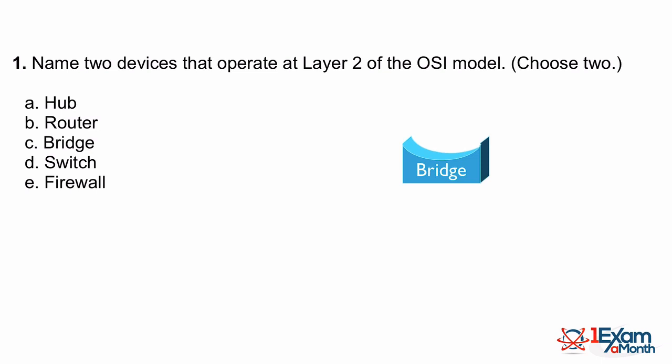An Ethernet bridge could break apart collision domains and learn the MAC addresses connected to each of its ports. If a frame came in with a destination MAC address residing off a different bridge port, the bridge would know and forward that frame out of the appropriate port. However, the bridge made forwarding decisions in software and didn't have a particularly high port density. Things really improved in the 1990s when we started seeing lots of Ethernet switches, including the Cisco line of Catalyst Ethernet switches.